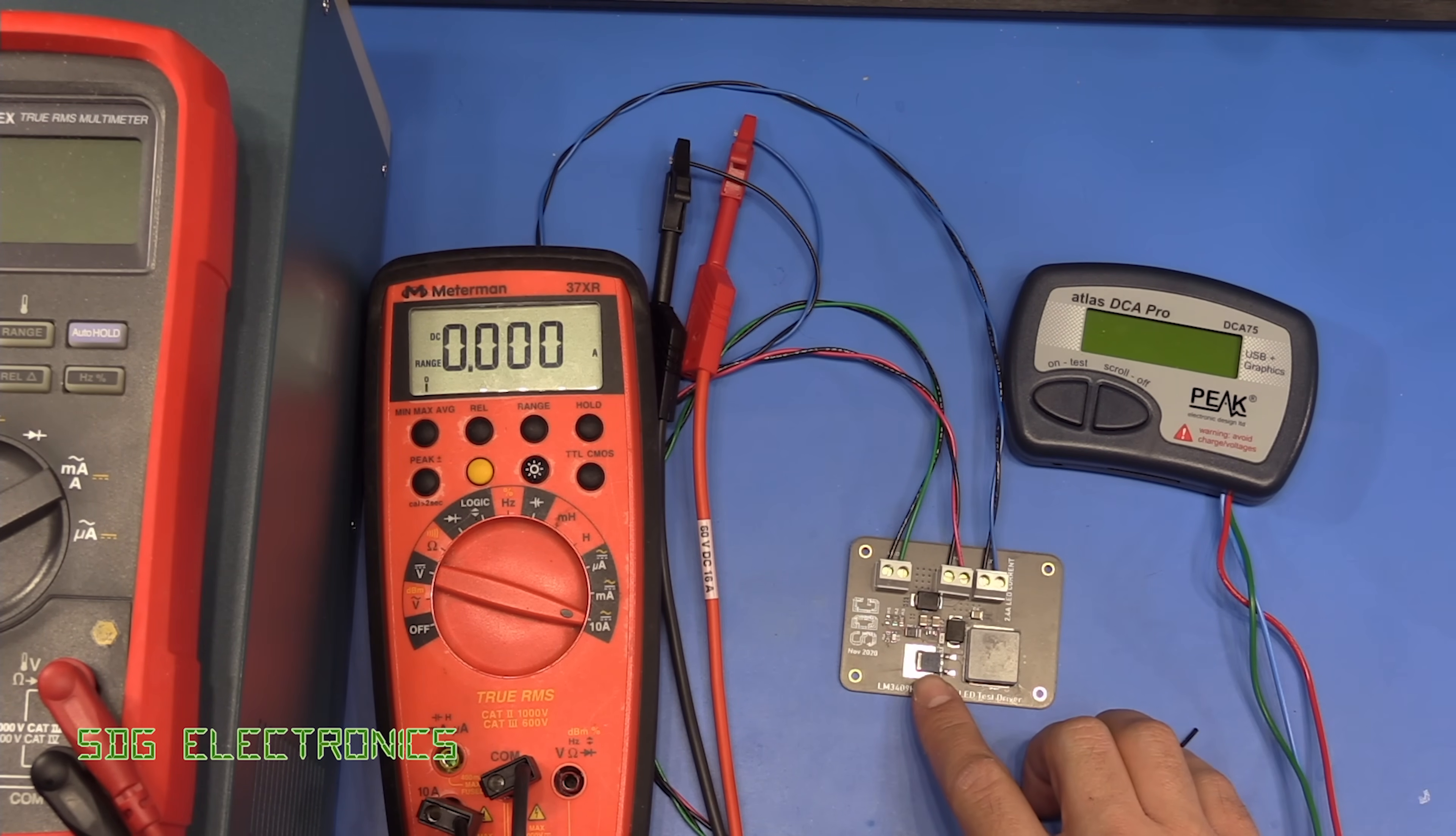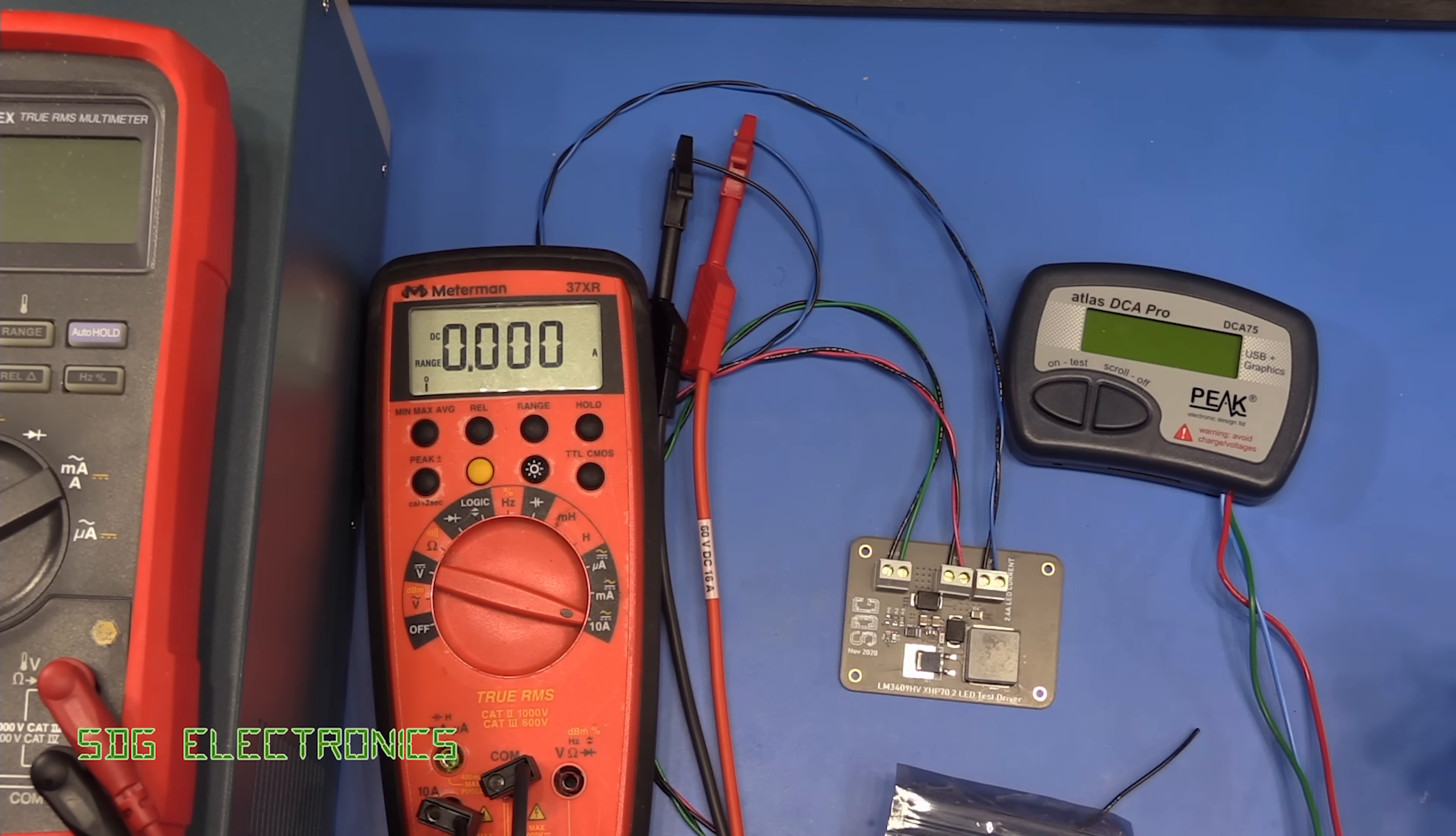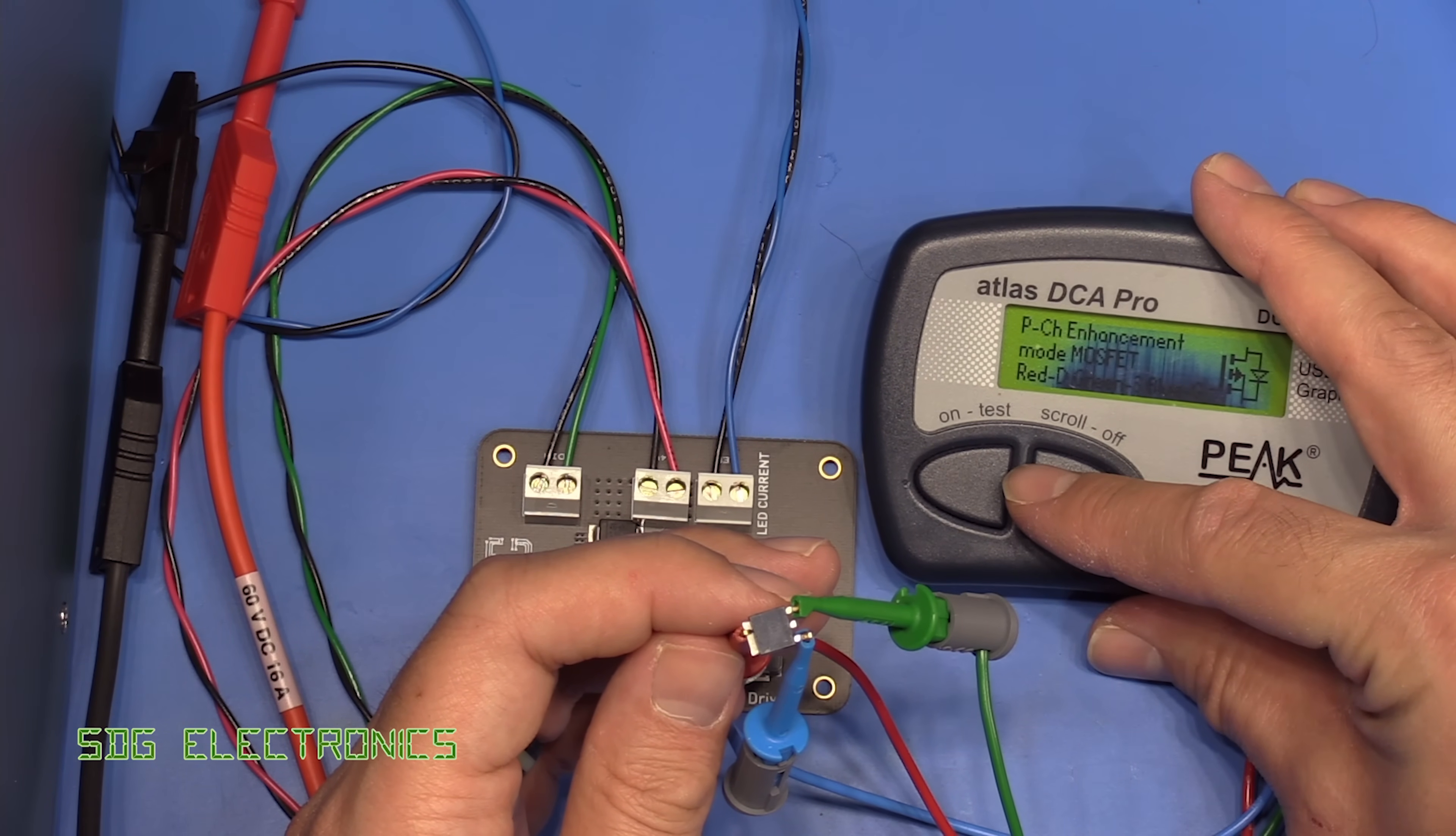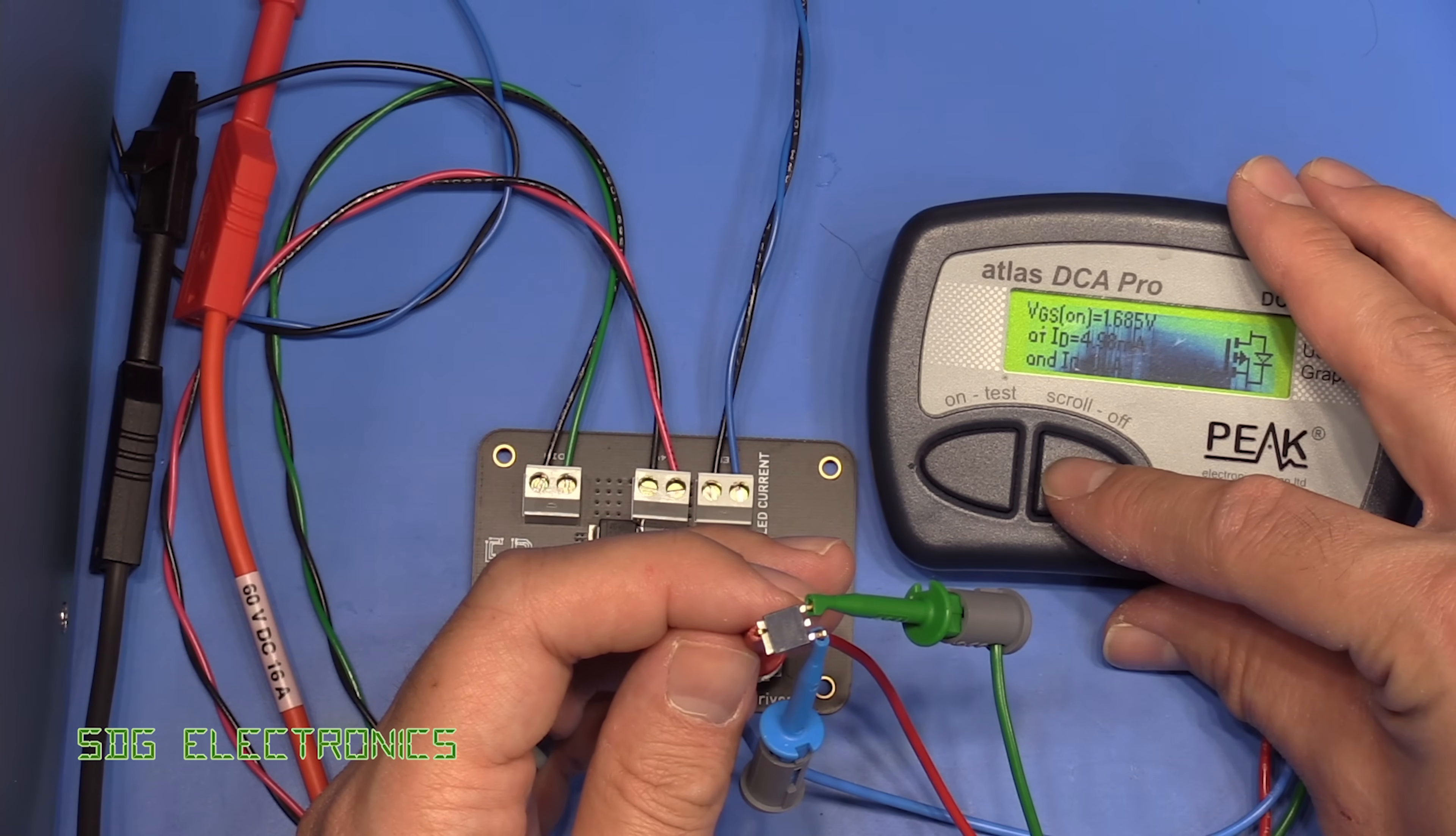So I think what we'll probably have to do is desolder this MOSFET and test it with the component tester. This is the Atlas DCA Pro. First of all probably what we'll do is we'll just have a look at the components raw out the packet. These are from LCSC and just check they are what they say they are. Right so I've got the device connected up. This is one fresh out the packet so we should see the blue is the gate, red is the drain and green is the source. So peach on a MOSFET, red is the drain, green is source, blue is gate. So that is working properly.